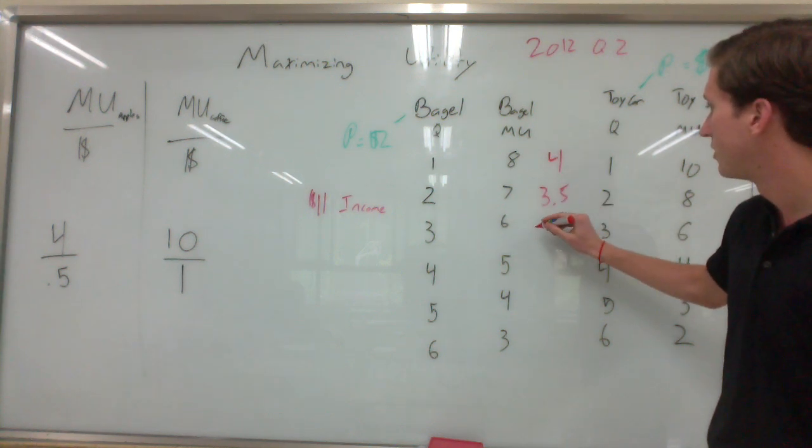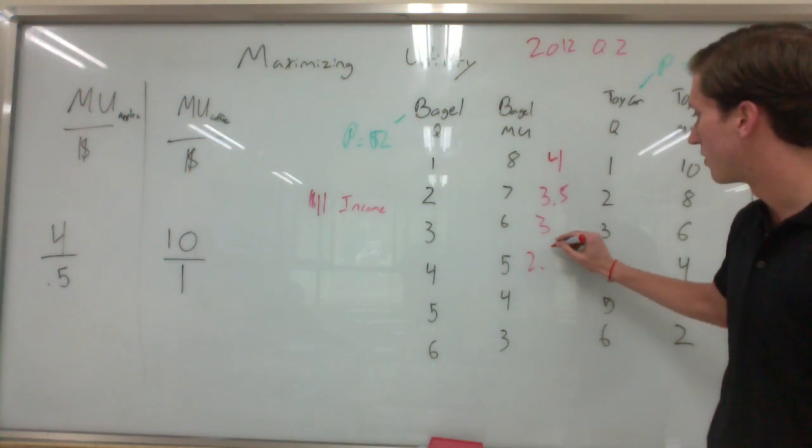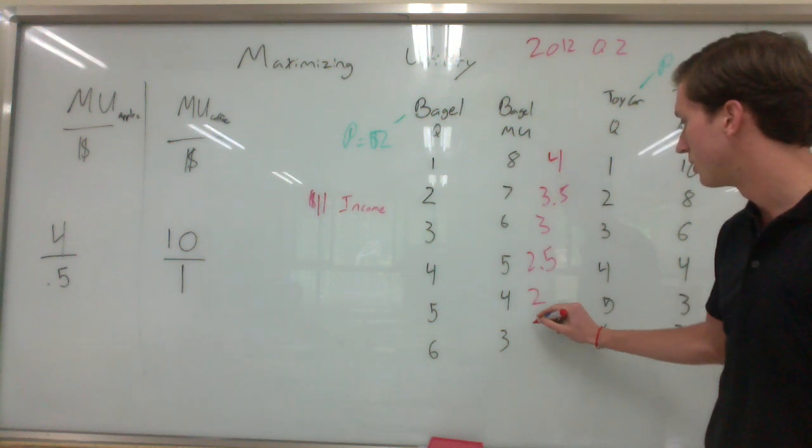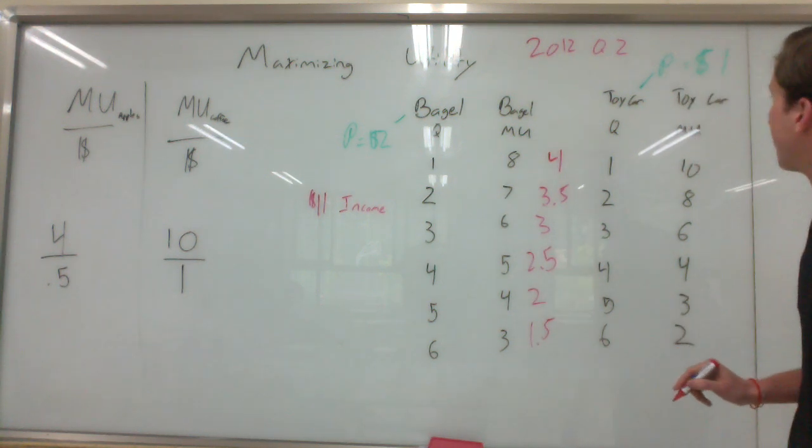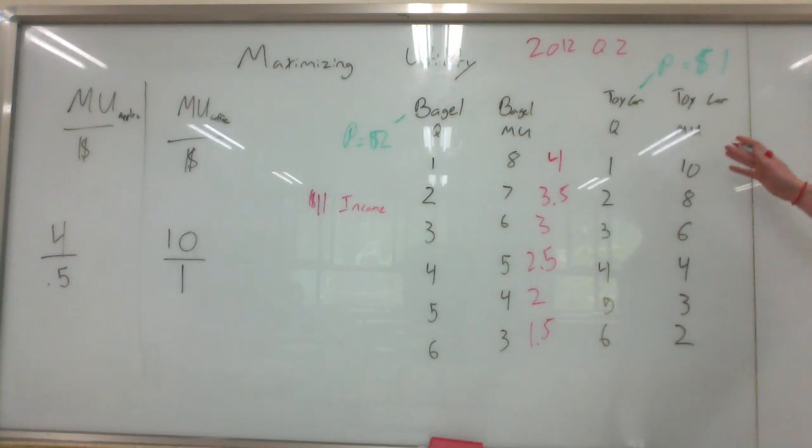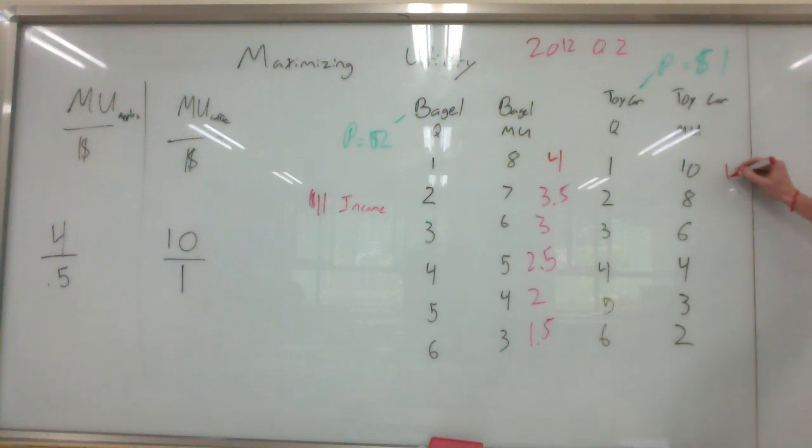And we have $3.5, $3, $2, $2, and $1.5. Now since the toy car price is $1, the marginal utility per dollar is going to be the same as the marginal utility.